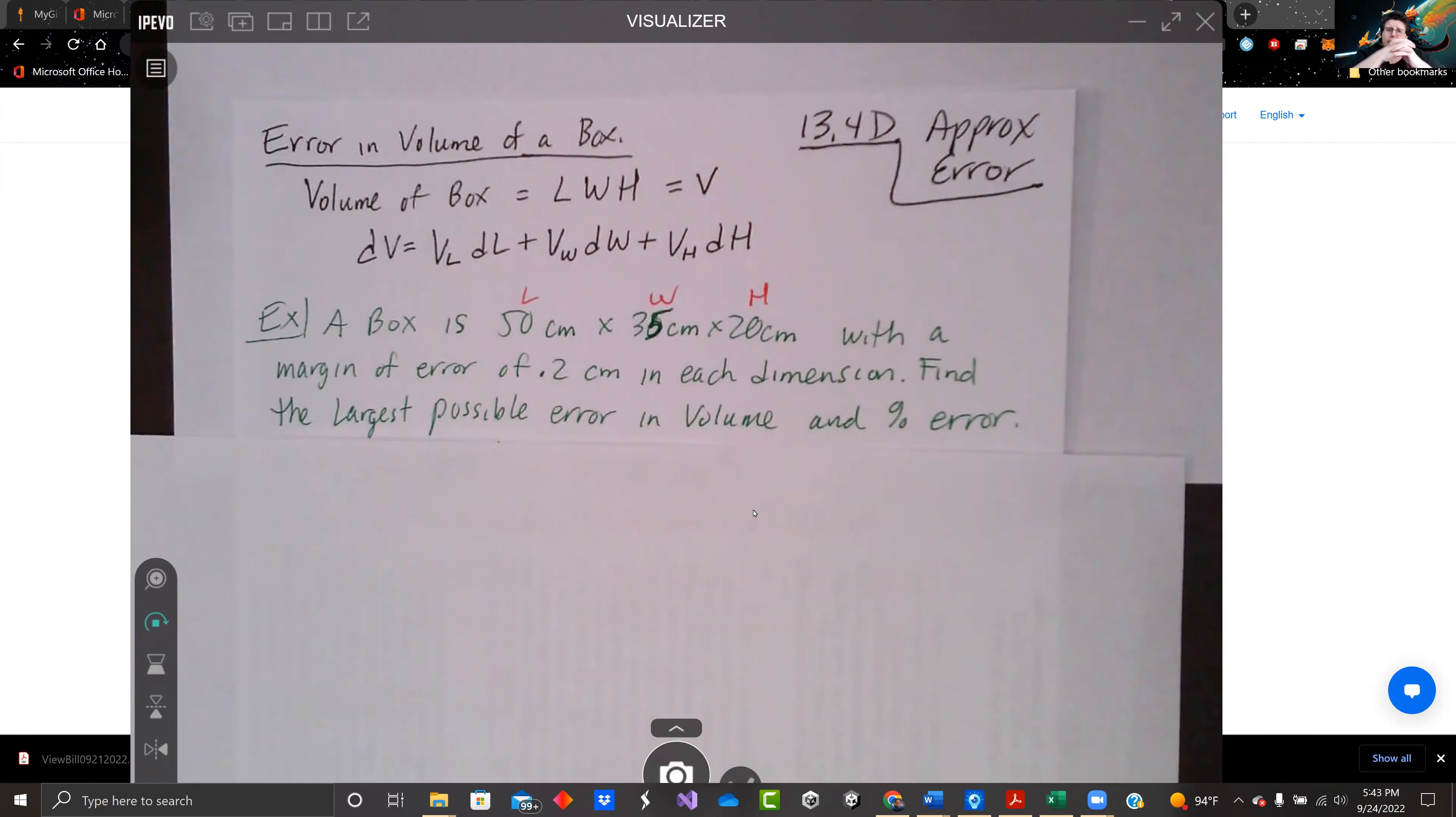So we know the volume of the box, the formula is length times width times height. If we look at the total differential, we take the derivative of V with respect to each of those along the way. So dV is the partial of V with respect to L times dL, plus the partial of V with respect to W times dW, plus the partial of V with respect to H times dH.